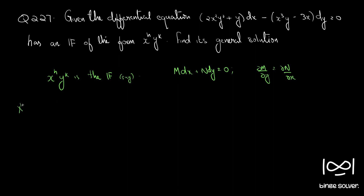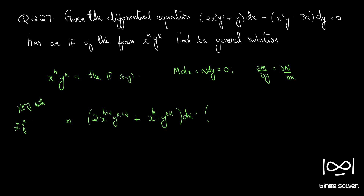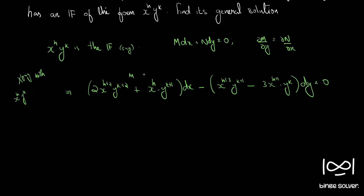Multiplying throughout with x^h · y^k, the new M becomes 2x^(h+2) · y^(k+2) + x^h · y^(k+1), and the new N becomes −x^(h+3) · y^(k+1) − 3x^(h+1) · y^k. So this is our new M and this is our new N.